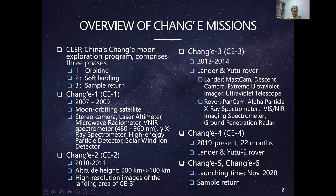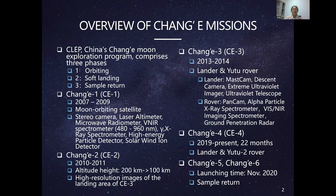Since I mainly use data from Chang'e missions, I'll briefly introduce them. Chang'e is the name of China's moon exploration program, named after the goddess of the moon in Chinese legend. The goddess has a pet rabbit called Yutu, which is also the name of the rover of Chang'e 3 and Chang'e 4. The program has three phases: orbiting, soft landing, and sample return.